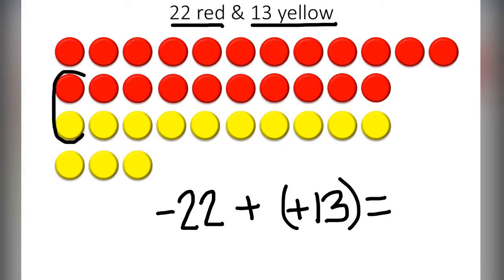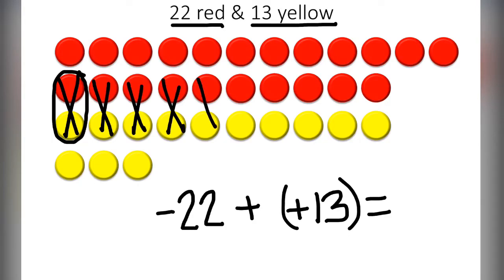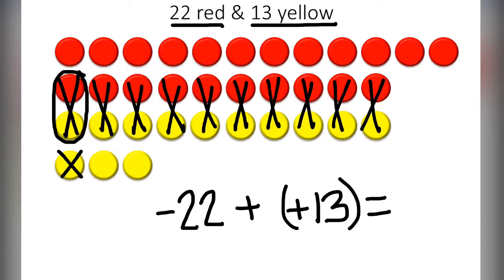We are going to match up every red with 1 yellow. 1 positive and 1 negative together will give you 0. Think about if I said plus 1 minus 1. We are at 0. We are going to continue doing that until we have eliminated every pair. Since there were 13 yellows we are going to eliminate all 13 yellow and 13 of the red.